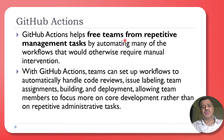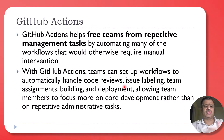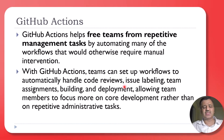GitHub Actions also frees teams from repetitive management tasks. We can automate a lot of management activity using GitHub Actions. For example, whenever you create a new issue you have to label it, you have to assign it to someone, or when someone tries to merge code with the main branch you have to review the code and run the test cases.